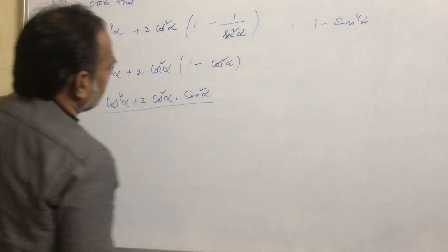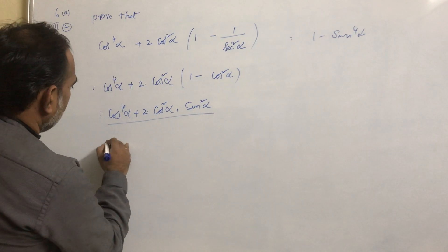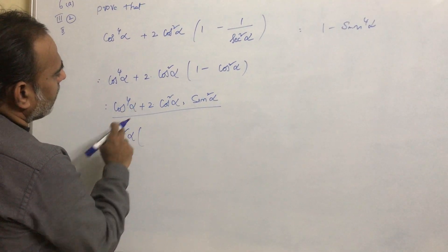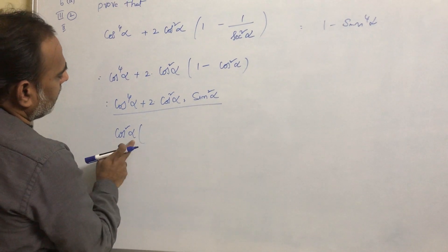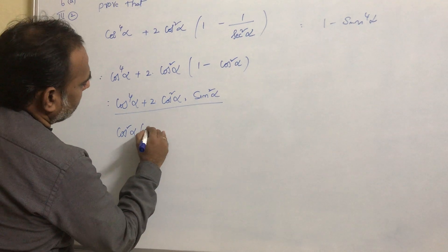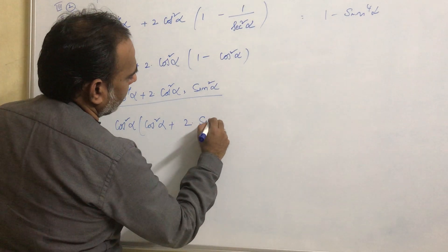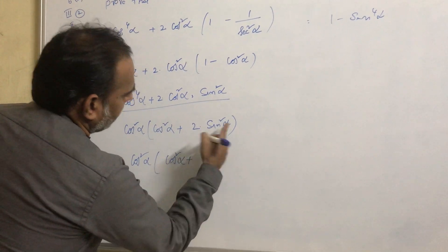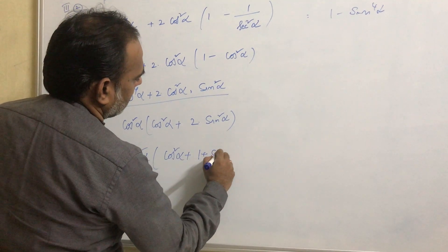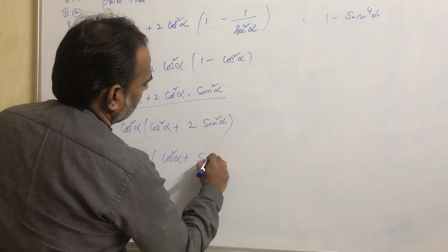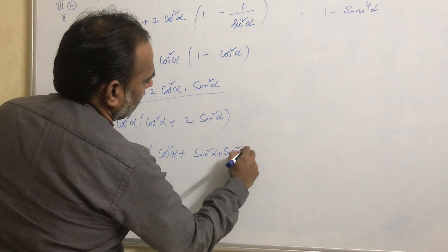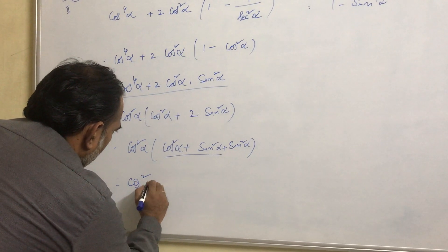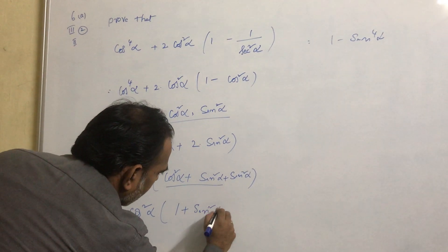By looking at this equation, we can take cos²α as a common factor. cos⁴α can be written as cos²α · cos²α. Taking cos²α common gives us cos²α · (cos²α + 2·sin²α). We can write 2·sin²α as sin²α + sin²α, and cos²α + sin²α equals 1.